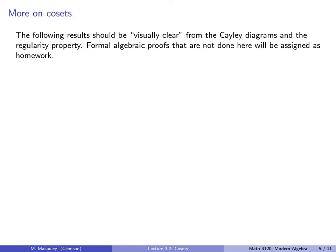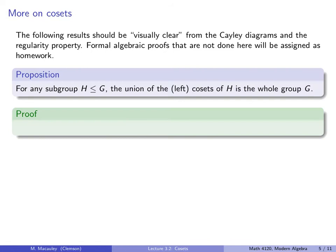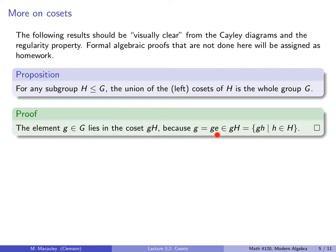On this slide I'll list a series of short results that should be visually clear from the Cayley diagrams. Formal algebraic proofs will be assigned as homework. First, for any subgroup H, the union of the left cosets of H is the whole group G. Proof: we want to show every element lies in some left coset. Take any element little g; it clearly lies in the coset gH, because g equals g times the identity, and the identity is in H.